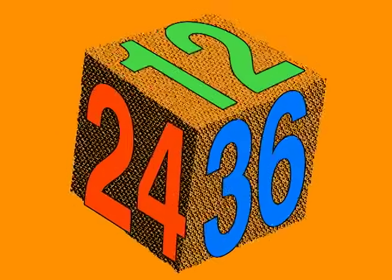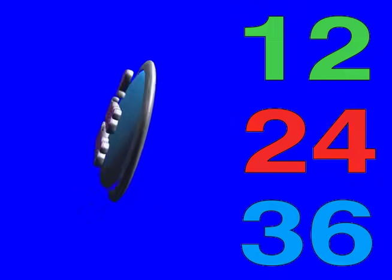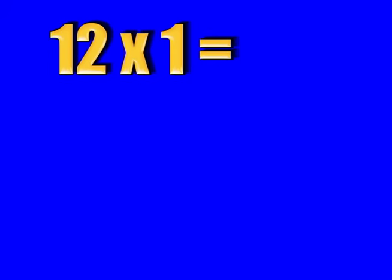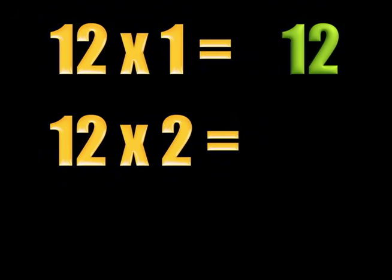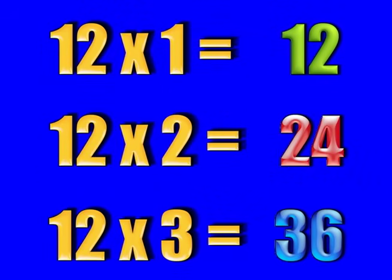12, 24, 36. 12, 24, and 36. 12 times tables need some tricks. 12 times 1 is 12, 12 times 2 is 24, 12 times 3 is 36. 12 times tables, here's your trick.